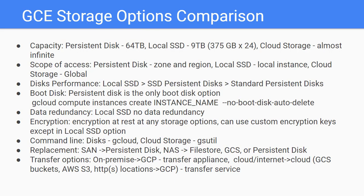You may have a question on which GCP storage option to pick for SAN or NAS storage. SAN stands for Storage Area Network, which is a tightly-coupled network of multiple devices that work with block-based data — so persistent disk is a good choice for SAN. NAS stands for Network Attached Storage; it's a single storage device that serves files over ethernet. For NAS, you can choose either File Store, Google Cloud Storage, or Persistent Disk.